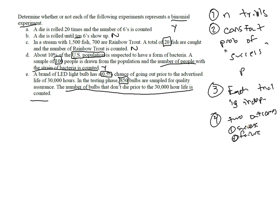And either the light bulb fails or it doesn't. It either dies or it doesn't die. So success would be that it doesn't die. A failure would be that it does die. And so all four assumptions are satisfied. Therefore, this is a binomial experiment.